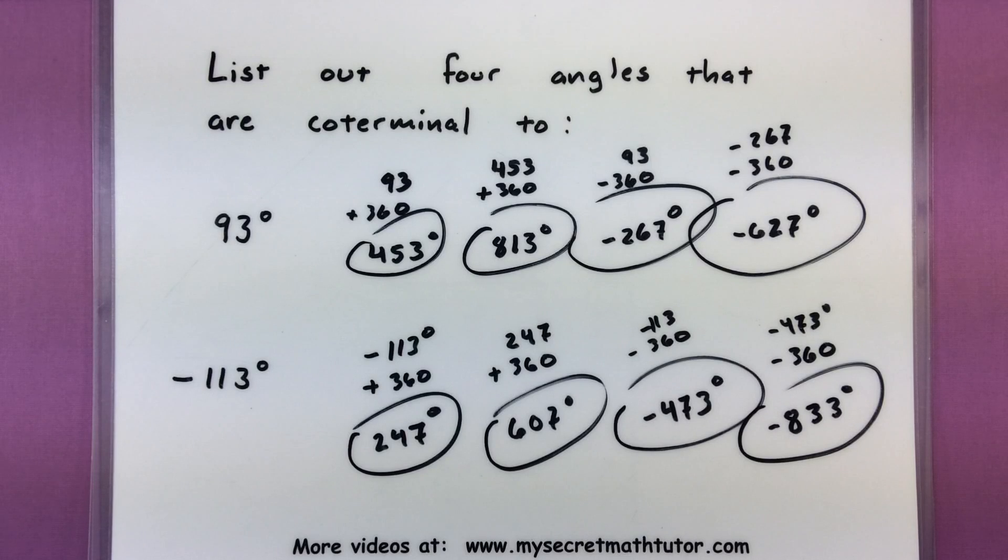So again, the key for finding coterminal angles is to simply add or subtract 360 degrees. Definitely read your instructions carefully, I've seen lots of different versions of this. Some will say find the smallest positive coterminal angle, or find the largest negative coterminal angle. So just make sure that whatever coterminal angle you do find, it fits your instructions. If you'd like to see some more videos, please visit MySecretMathTutor.com. Thank you very much.